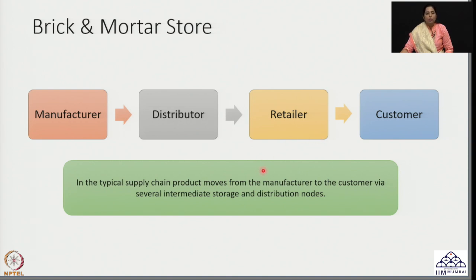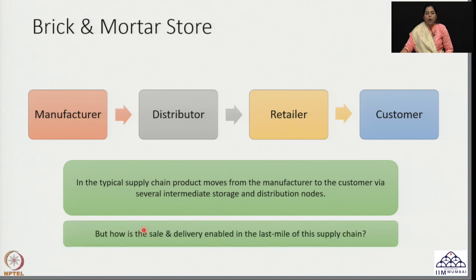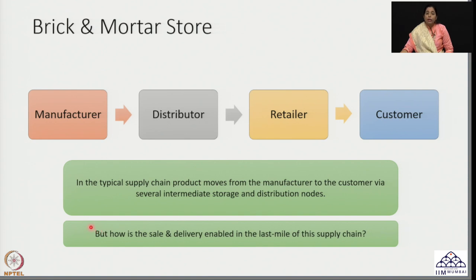We will look at a very specific zone — the last mile — which is what we call the last mile for any supply chain. The question is: how is the sale and delivery actually enabled in the last mile? Last mile delivery is a very popular aspect of supply chain visible to any customer nowadays, and we shall pick up this part of the supply chain for discussion in the context of brick and mortar.